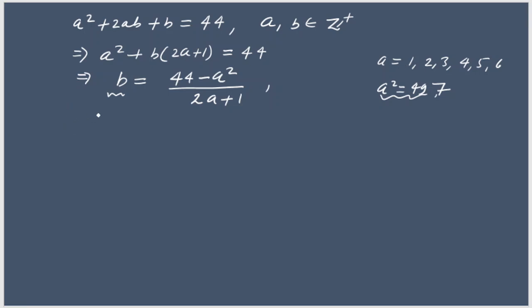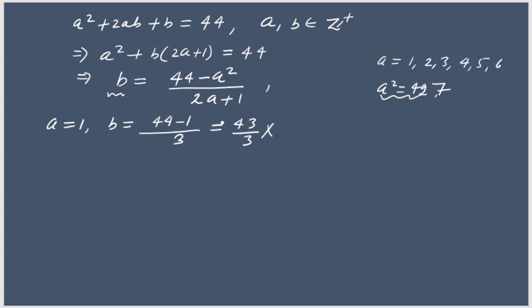If a = 1: b = (44 − 1) / (2×1 + 1) = 43/3, which is not an integer. So this option is rejected.